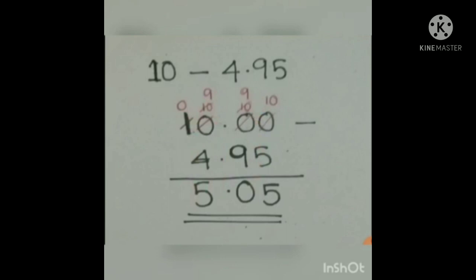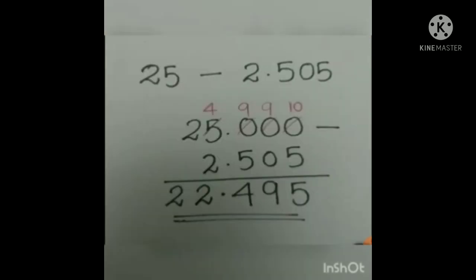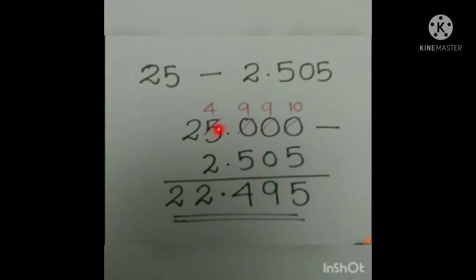When you get a whole number in a subtraction problem, be careful. For example: 25 minus 2.505. Since 25 is a whole number, we write it as 25.000 based on the decimal places of the second number. Borrowing and subtracting: 0 becomes 10, 10 minus 5 is 5; then 9 minus 0 is 9, 9 minus 5 is 4, 4 minus 2 is 2, leaving 2. After completing subtraction, verify: answer plus the smaller number should equal the larger number.